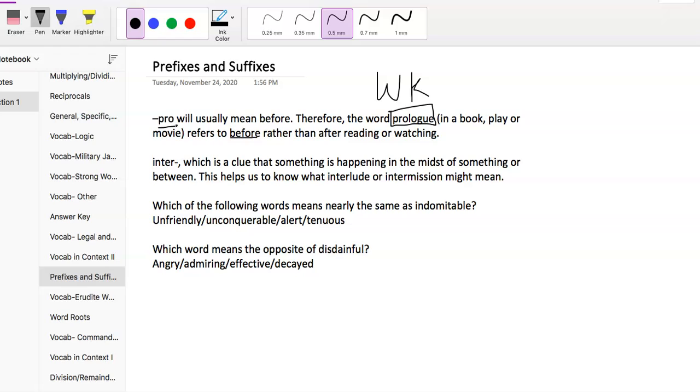Inter is another one that shows up a lot because there are a lot of words with that prefix. Inter is a clue that something's happening in the middle of something. When we get words like interlude or intermission, we get a sense that it means something happening in between, in the middle of a play or something like that. A lot of people are more familiar with intermission. But you see that prefix inter—that tells you middle.